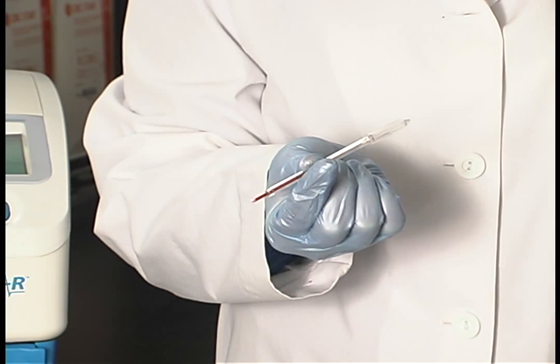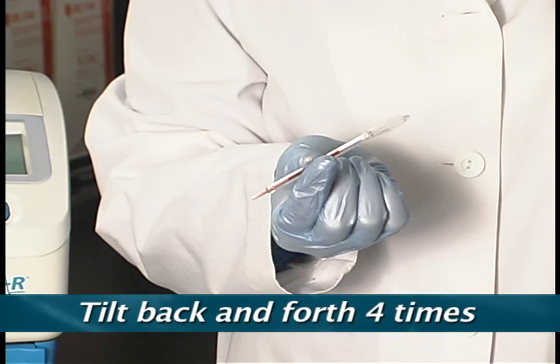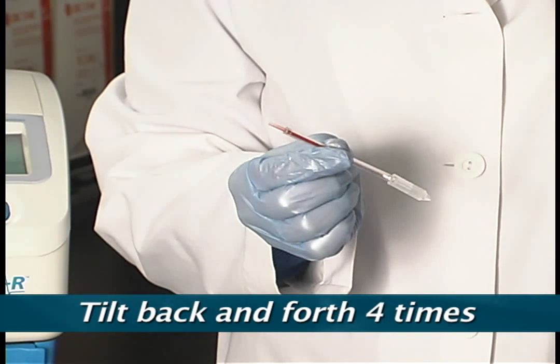Tilt the tube back and forth to mix the sample with the acrodine orange. One back and forth motion equals one mix. Do this at least four times.